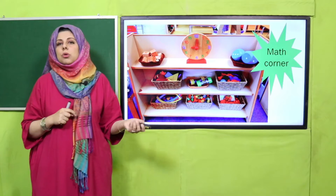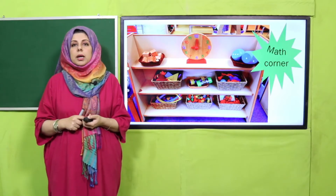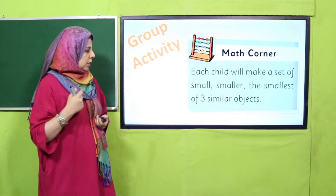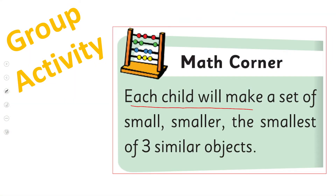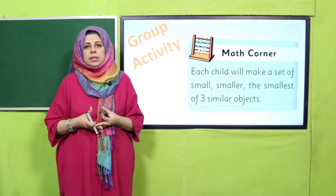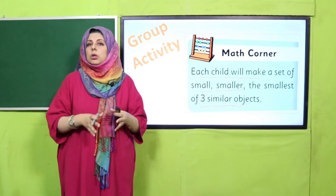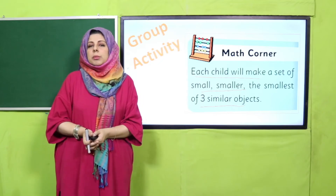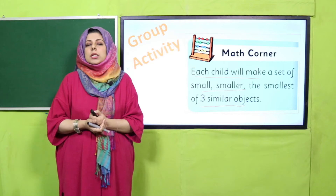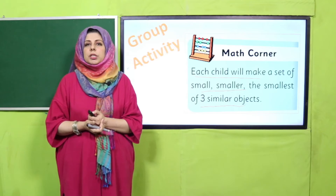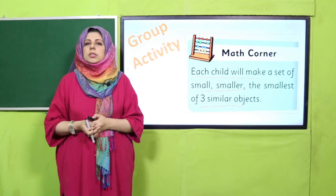So let's move on to the math corner activity. Math corner mein jaake aapne kuch cheezon ko dhundna hai, search karna hai, unko count karna hai. Each child will make a set of small, smaller and the smallest of three similar objects. Yani aapne koi si bhi teen toys ya koi si bhi teen cheezein, ek jaisi lekar aani hain, aur phir unko arrange karna hai — small, smaller or smallest mein. Ye group activity hogi. Jaldi se jaake kuch cheezein grab kar lo.